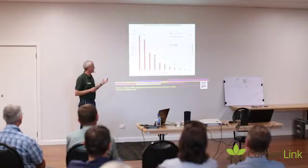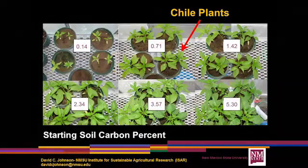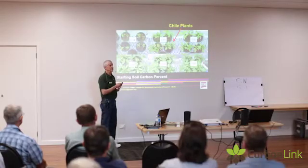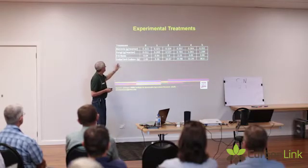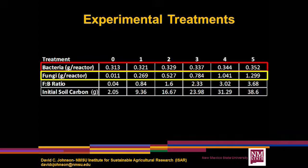We were not expecting this result, so the next experiment looked at growing chili plants with increasing quantities of this compost in a sand-based mixture, to see what the influence of the fungal-to-bacterial ratio was. In these reactors, there was not a great change in bacterial biomass — 0.31 increasing to 0.35. Fungi, however, showed a hundred-times increase, from 0.01 to 1.29, giving a fungal-to-bacterial ratio ranging from 0.04 to 3.68.